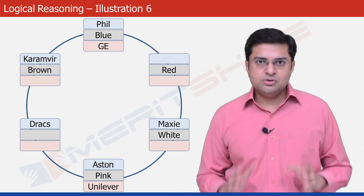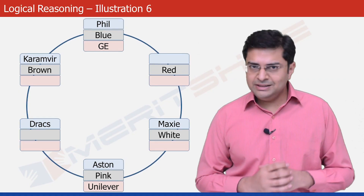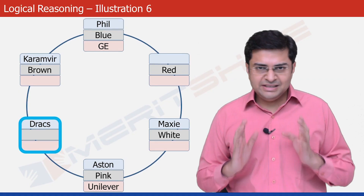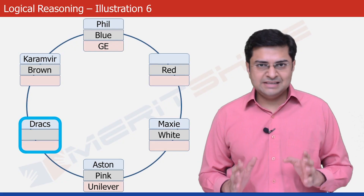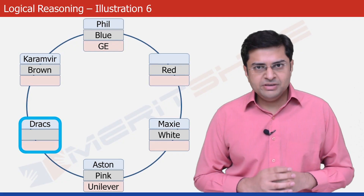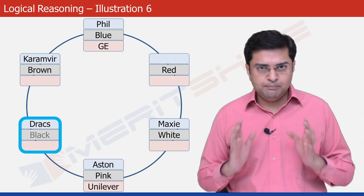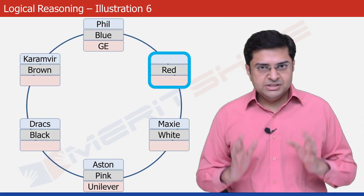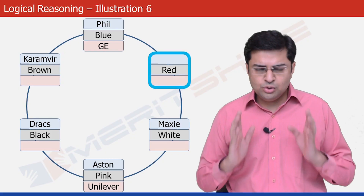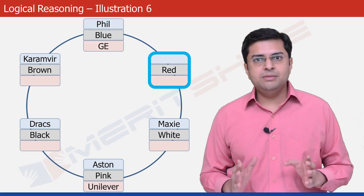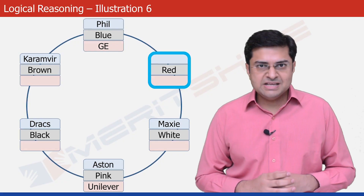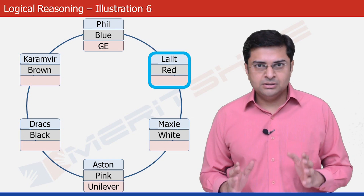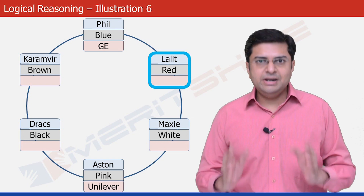The next two steps don't require any statement. Look at the highlighted box — it's the only box in the structure without a color filled in, and the only color left is black. So this box has to be filled with black. Similarly, the next highlighted box is the only one without a name, and the only person whose name hasn't appeared yet is Lalit. So this box needs to be filled with Lalit.